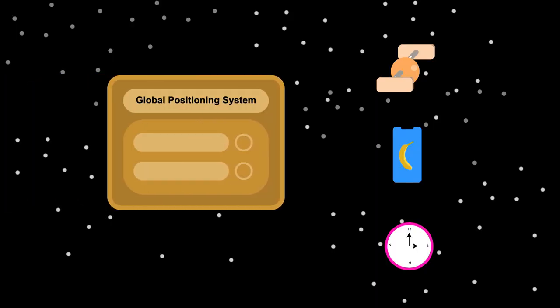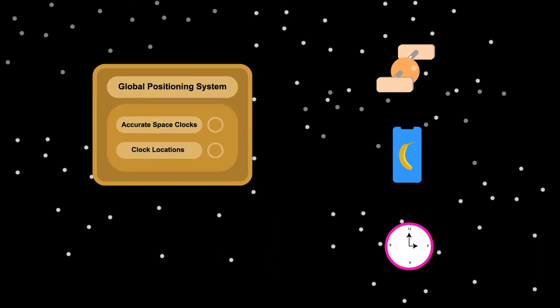In essence, the Global Positioning System is a collection of accurate clocks in space whose location we know of at all times, which is why we may not need the satellites anymore.